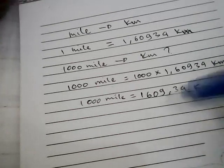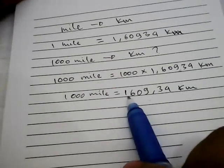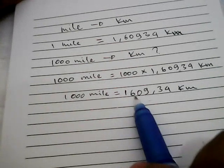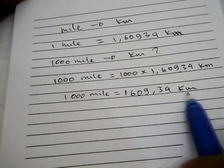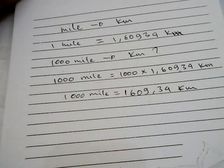Right? So 1,000 miles is equal to 1,609.34 kilometers. Right? That's the result.